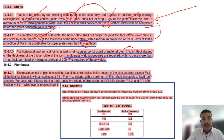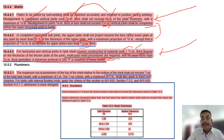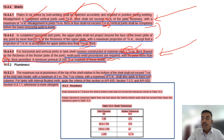For tank shell courses constructed of material over 1.5 inches thick, multi-pass weld procedures are required. No single pass more than 3/4 inch (18 mm) is permitted. A minimum preheat of 200 degrees Fahrenheit is required. If the thickness is more than 1.5 inches, multi-pass is always required, each pass should not exceed 3/4 inch, and the minimum preheat shall be 200 degrees Fahrenheit.